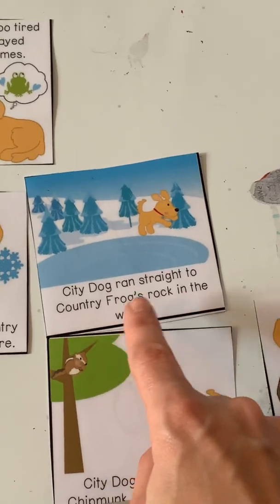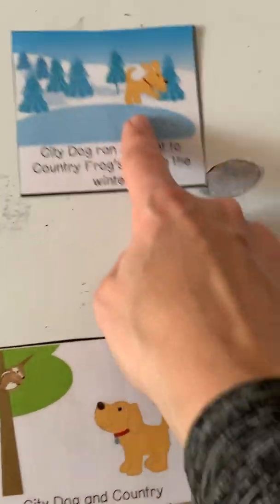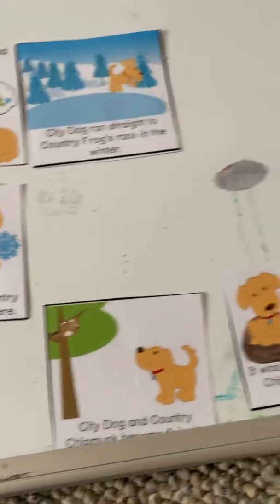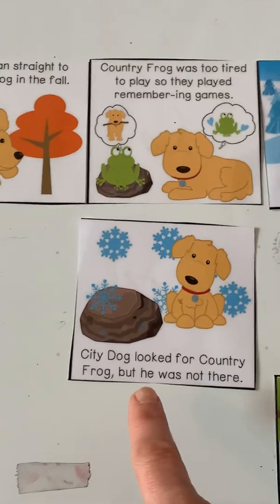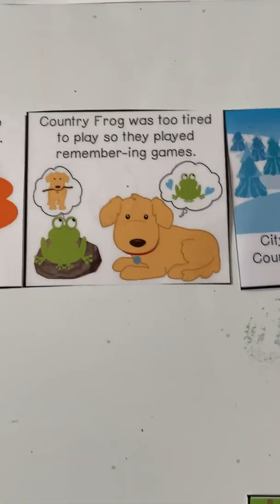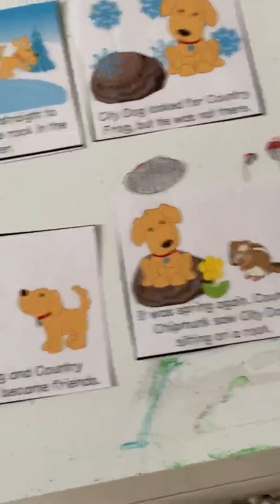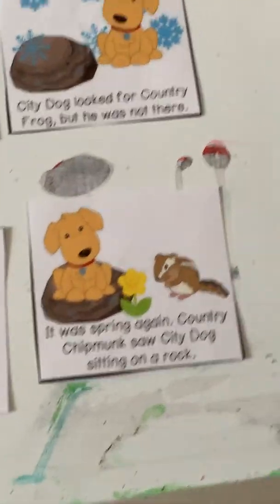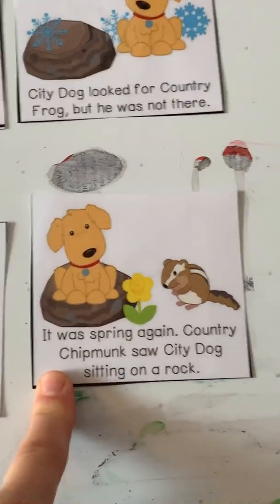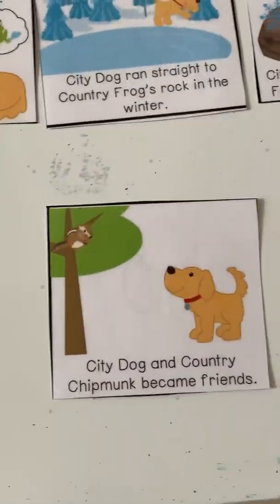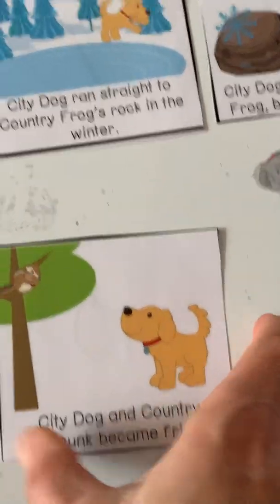City Dog ran straight to Country Frog's rock in the winter. And what did they do in the winter? City Dog looked for Country Frog, but he wasn't there. Where was he? So we have spring, fall, winter — and then it goes back to spring. It was spring again. Country Chipmunk saw City Dog sitting on a rock. And then the last thing: City Dog and Country Chipmunk became friends.